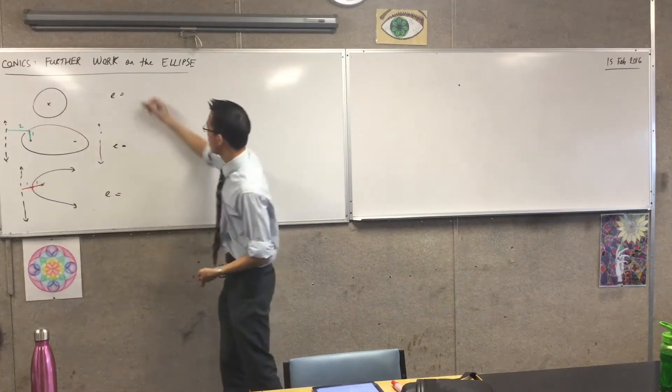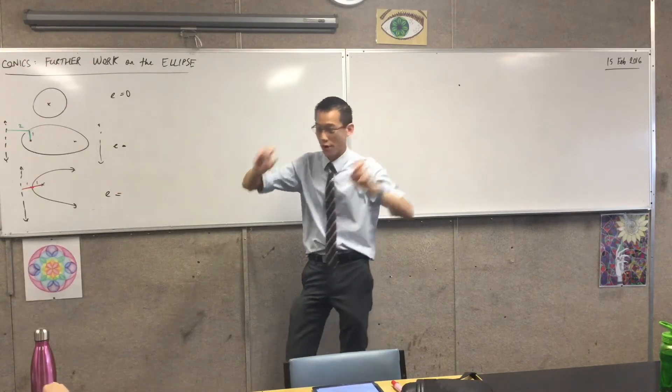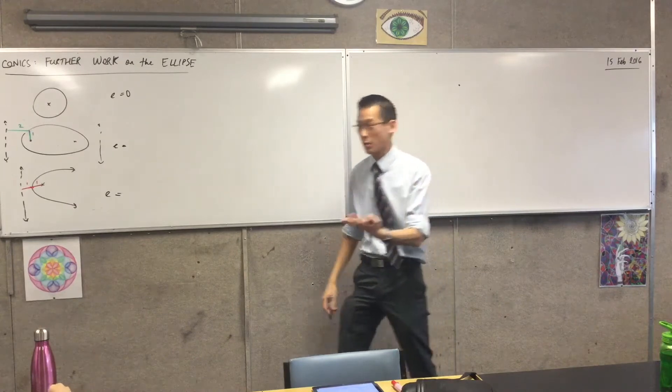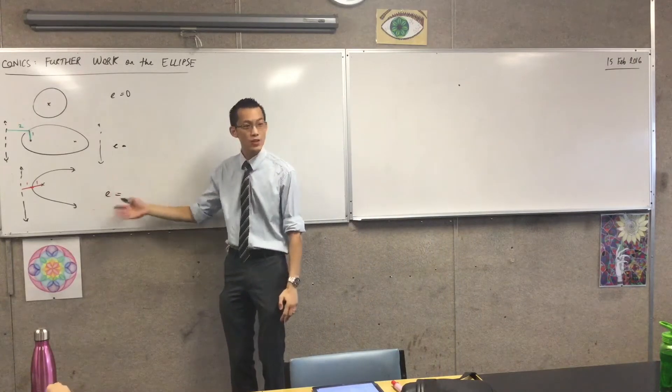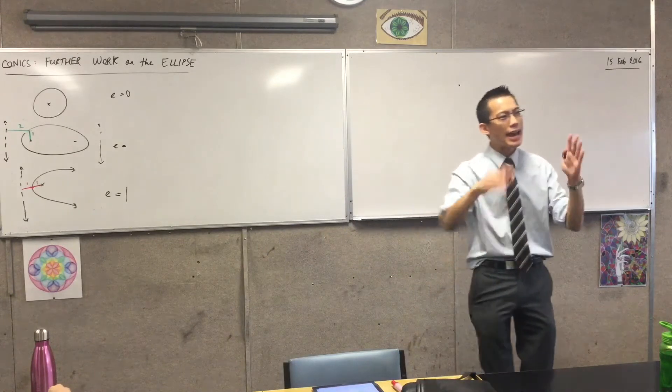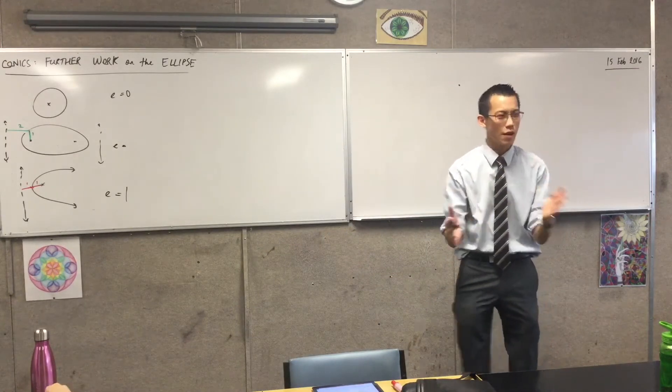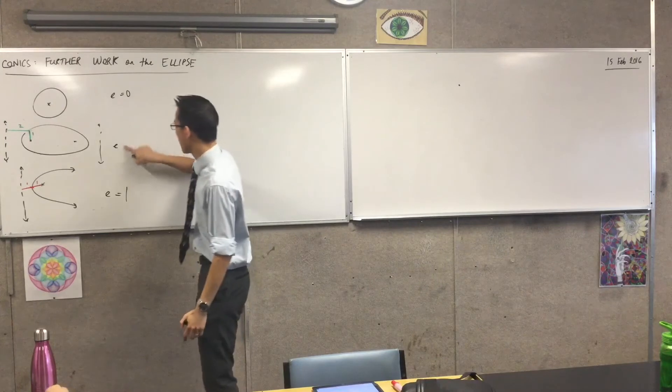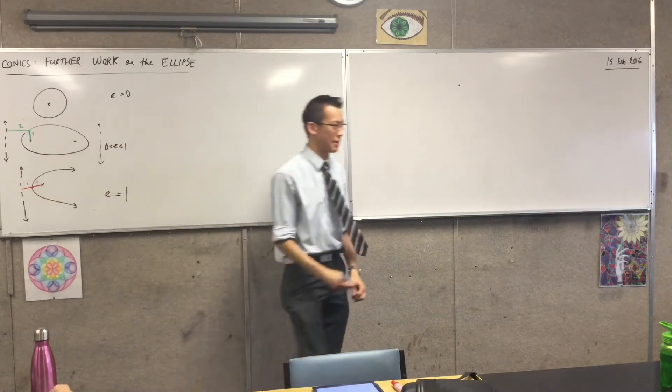So here were our scenarios, we said, if you have an eccentricity of zero, come in, a circle is what you have. If you have an eccentricity of one, a parabola is what you can have. And anywhere between there, if you are bounded from zero to one, then you get the ellipse.